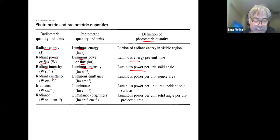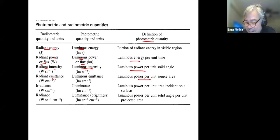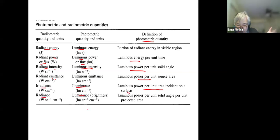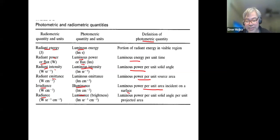Then we have emittance corresponding to luminous power per unit area. Irradiance corresponds to illuminance — luminous power per unit area incident on a surface. And radiance corresponds to luminance or brightness — luminous power per unit solid angle per unit projected area.